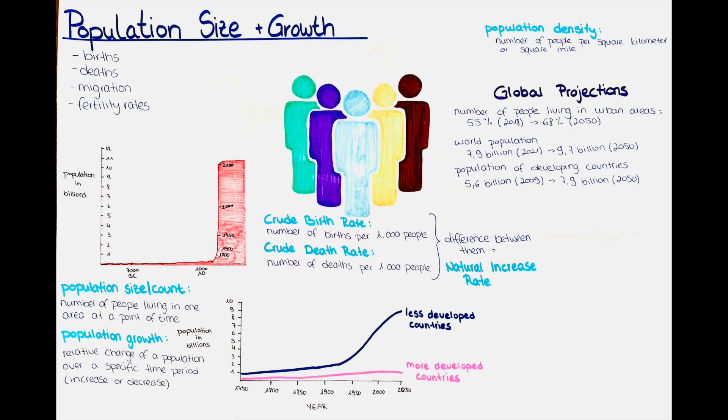Population size and growth is a critical aspect of human society that has significant implications for health, social, economic and environmental outcomes. Accurately measuring population size and growth is essential to understand the current state of a population and to forecast future trends.